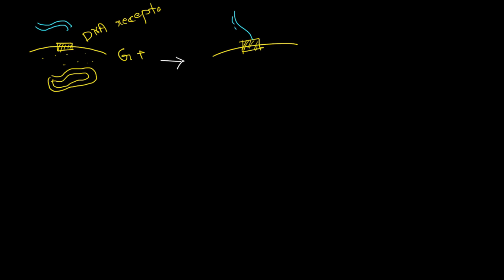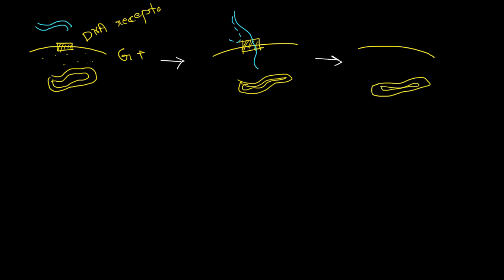Some of these receptors contain nuclease activity which cleaves one of the strands of the extracellular double-stranded DNA, so one of the strands gets fragmented and only a single strand can enter within the bacterial cell. The single-stranded DNA then goes and binds with some cytoplasmic proteins. This is the single-stranded DNA that just entered within the cell, and it now binds with some cytoplasmic proteins.